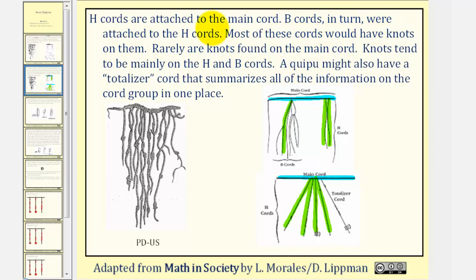B-cords, in turn, were attached to the H-cords. Looking at this diagram here, we see H-cords. Again, these are the cords that are attached to the H-cord. Most of these cords would have knots in them. Rarely are knots found in the main cord. Knots tend to be mainly on the H and B cords. A quipu might also have a totalizer cord that summarizes all the information on the cord group in one place. Notice how here we see one totalizer cord.